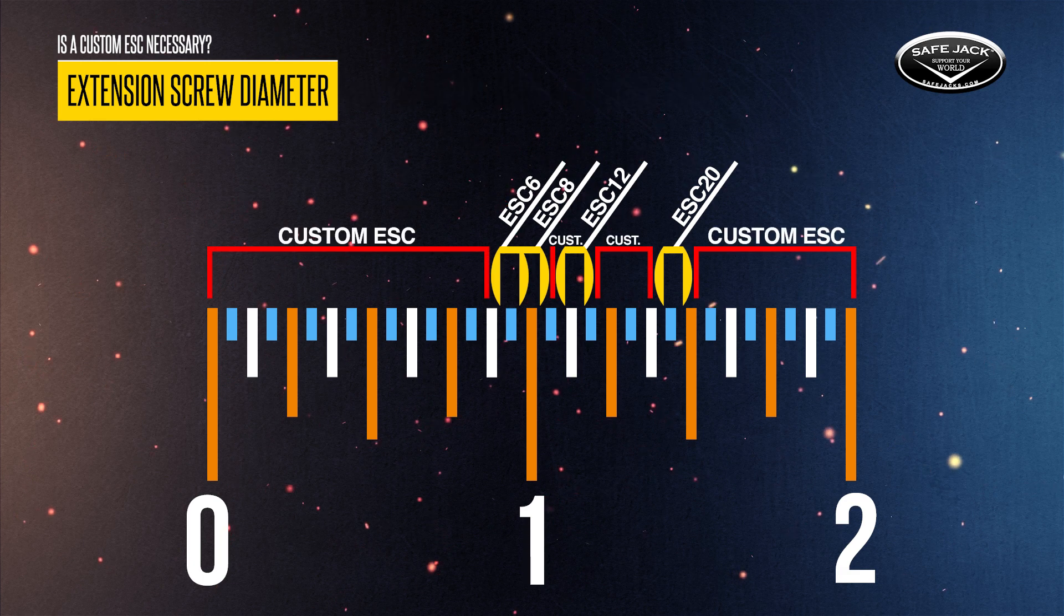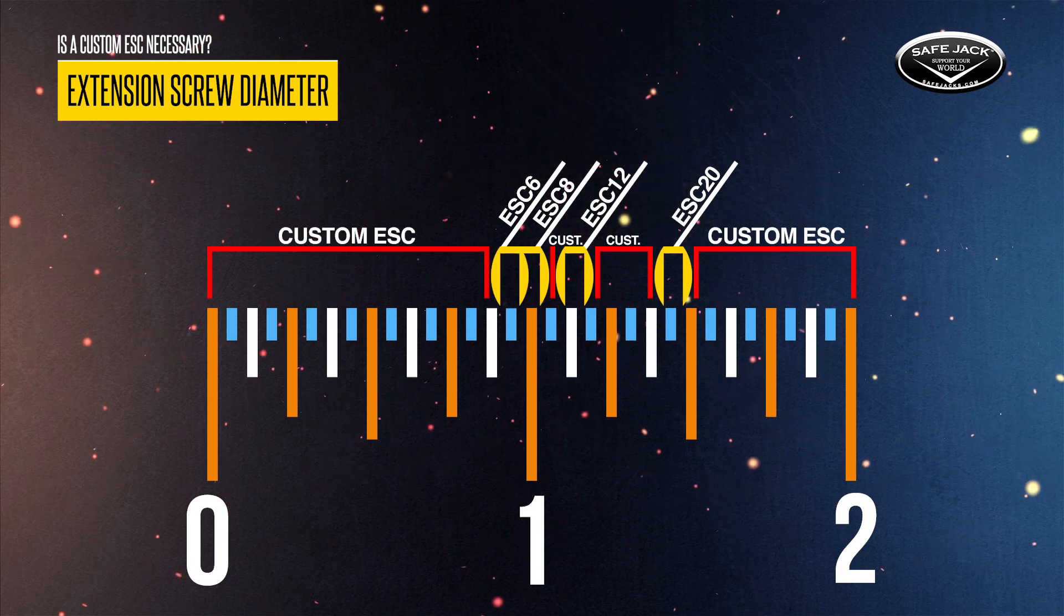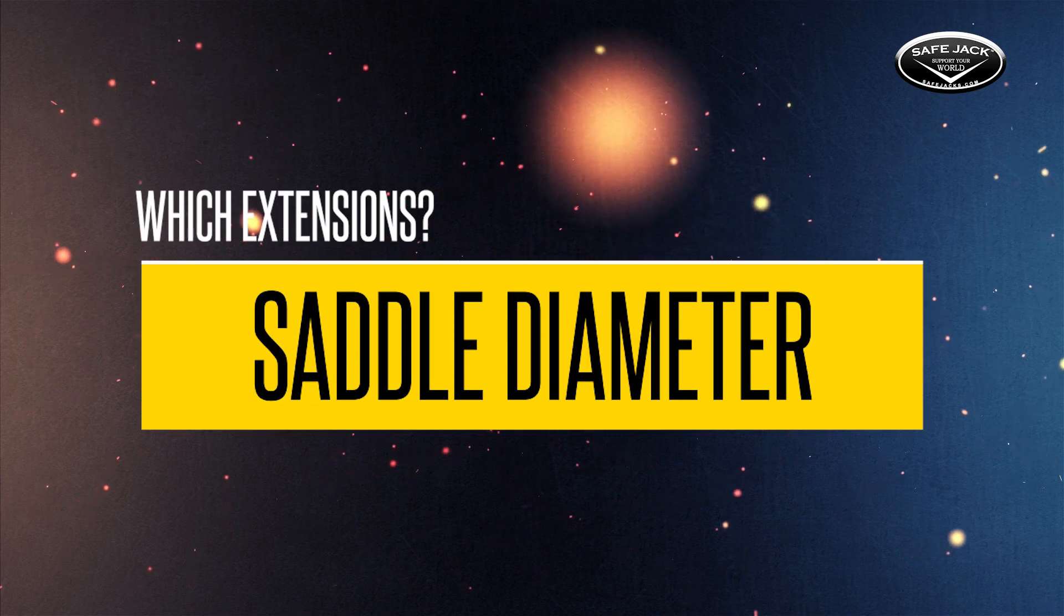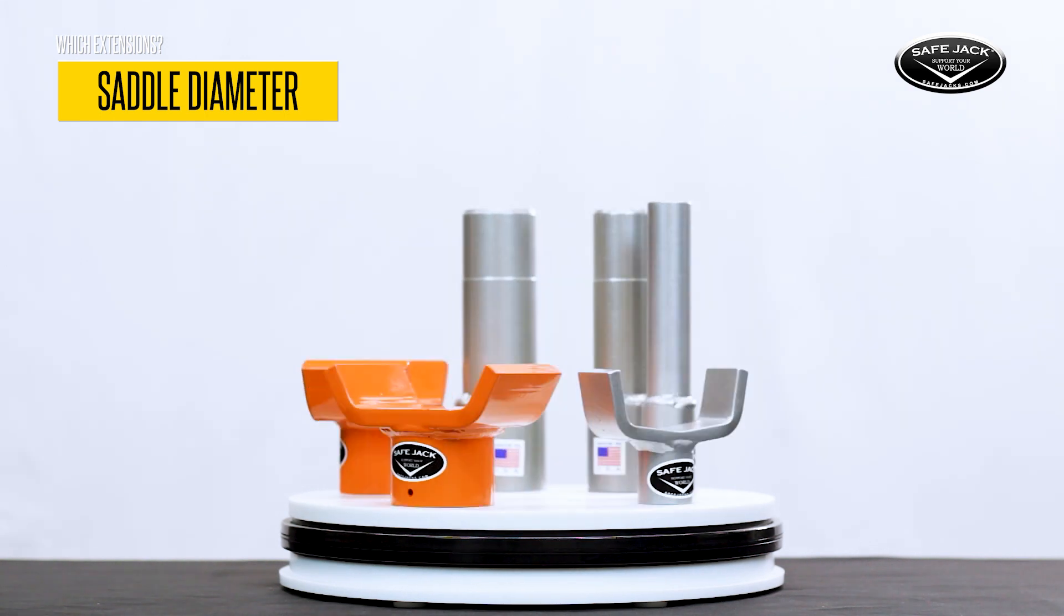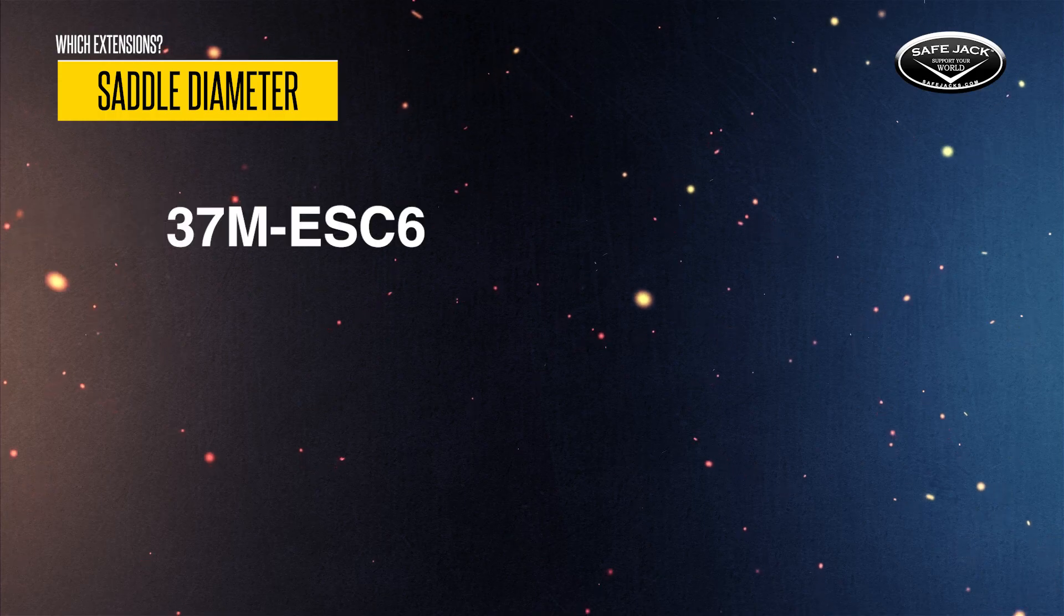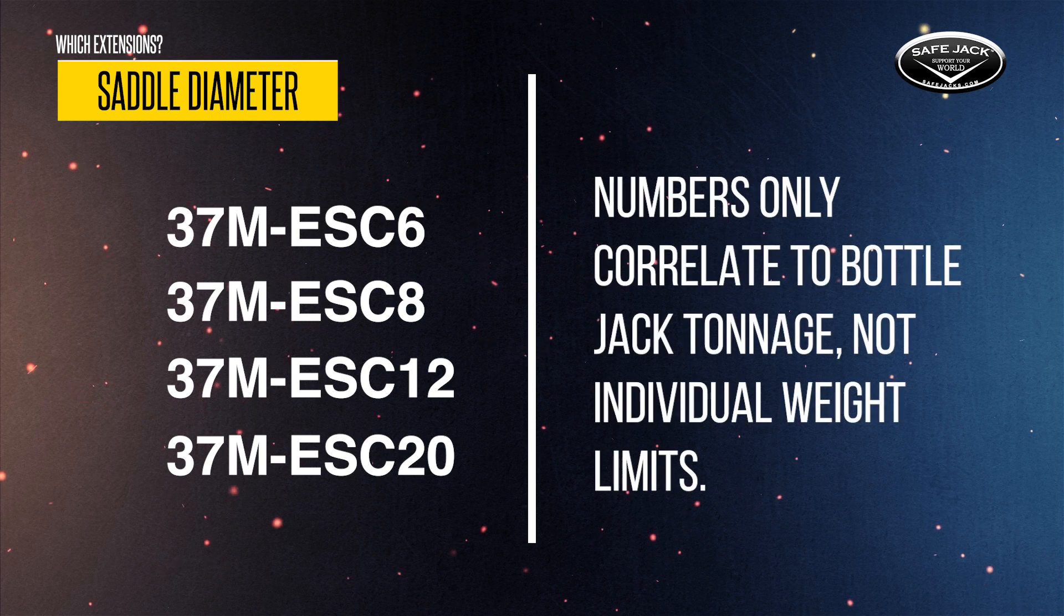For anything that falls outside of these measurements, your bottle jack will require a custom ESC. Next up, the saddle diameter. The diameter of your bottle jack saddle will affect which size extensions and lift pads you can use. Keep in mind that the tonnage of the following products only refers to their size and not their weight limit.